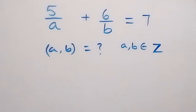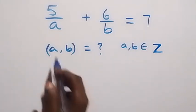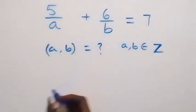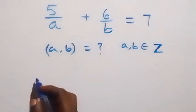Hello, you are welcome. How to solve for a and b in this nice algebra problem. From what we are given here, we can multiply through by ab to clear this fraction.